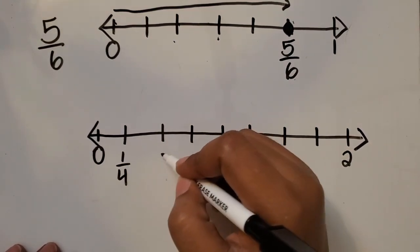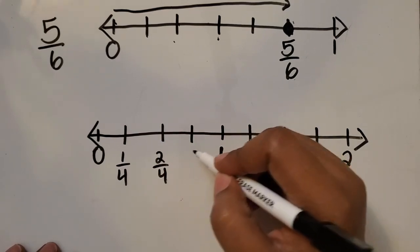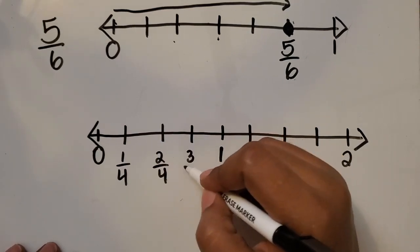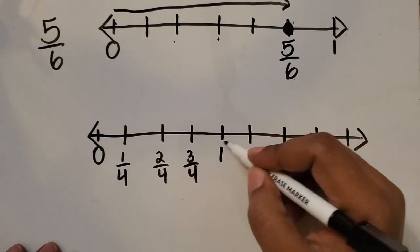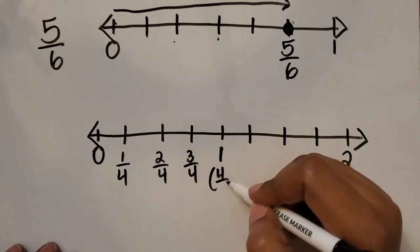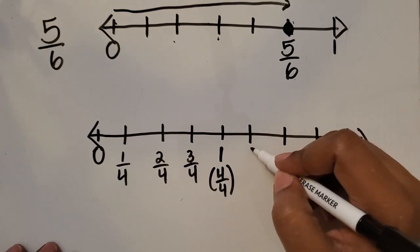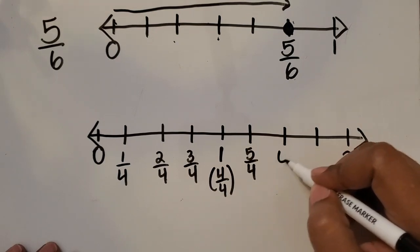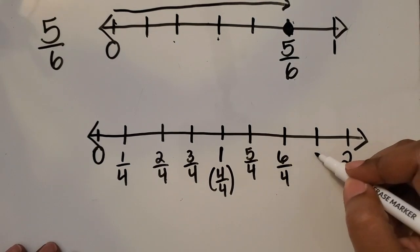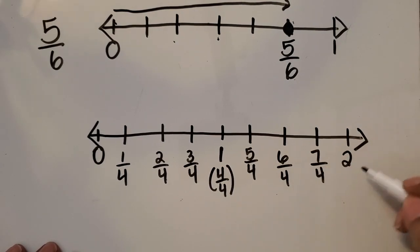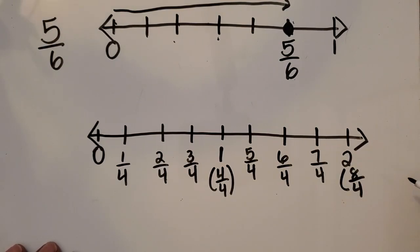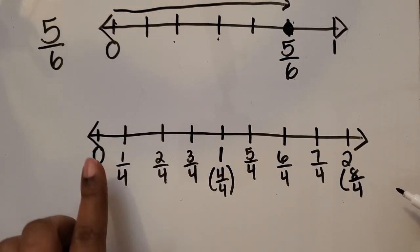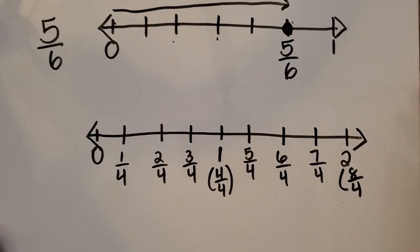Let's label those fourths: one-fourth, two-fourths, three-fourths, one whole — which is the same as four-fourths. Then five-fourths, six-fourths, seven-fourths, and then two wholes, which is the same as eight-fourths. So all of the fourths together equal eight-fourths.